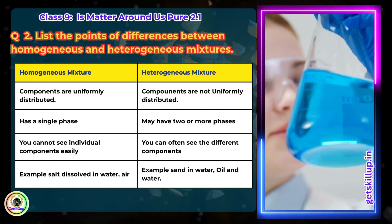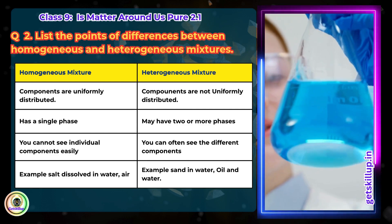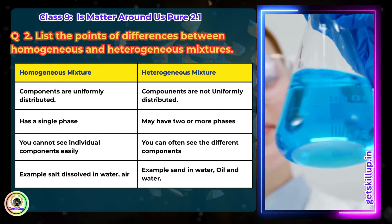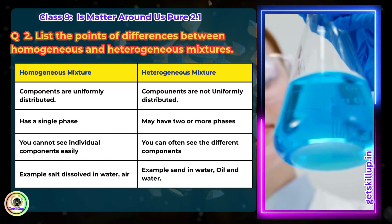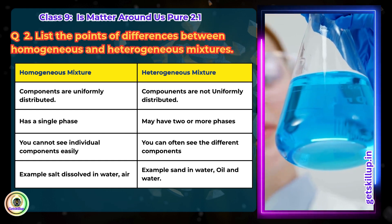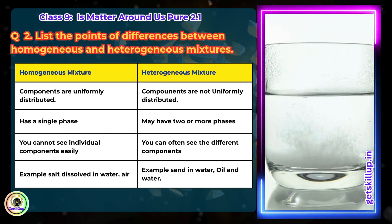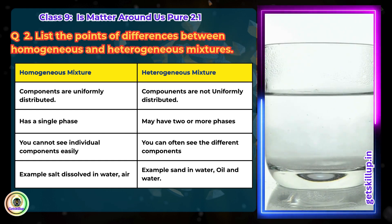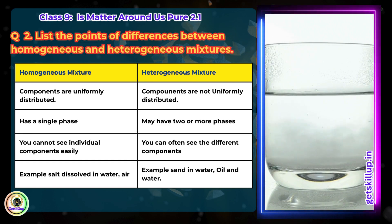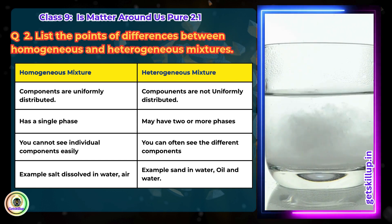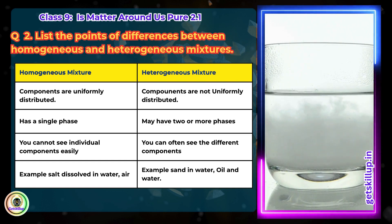Heterogeneous mixture: Components are not uniformly distributed and may have two or more phases. You can often see the different components. e.g. sand in water, oil and water.